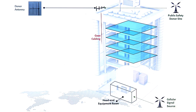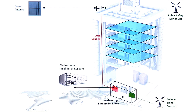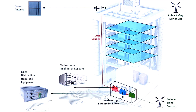That donor antenna is then connected through coax cabling, down through a lightning protection assembly, and then plugged into the repeater, or BDA. The BDA repeater will take the input signal from that donor antenna, amplify it to overcome any losses, and then distribute that to the head end equipment.